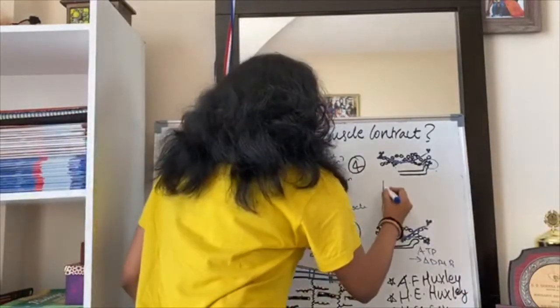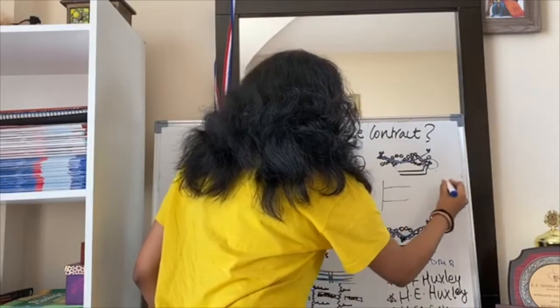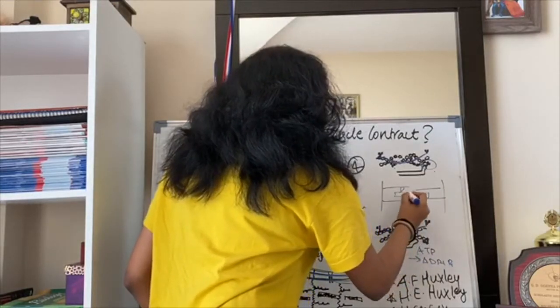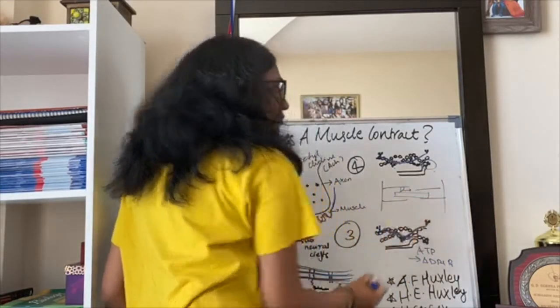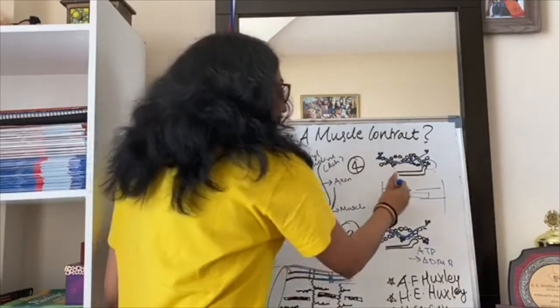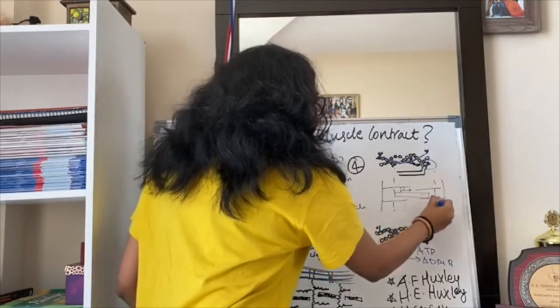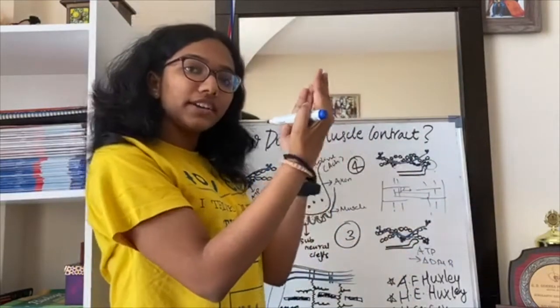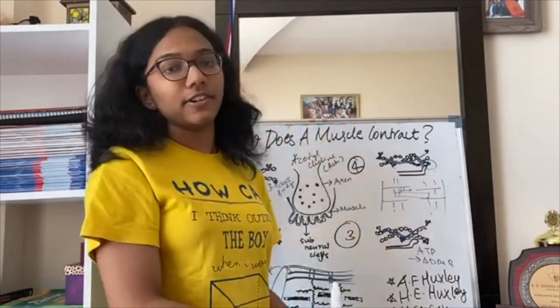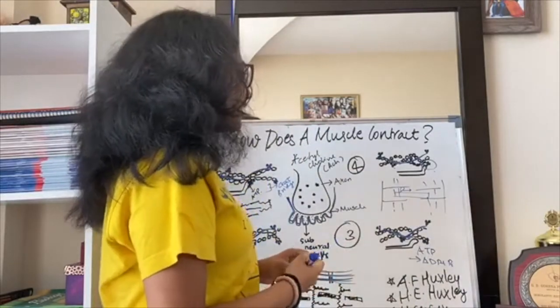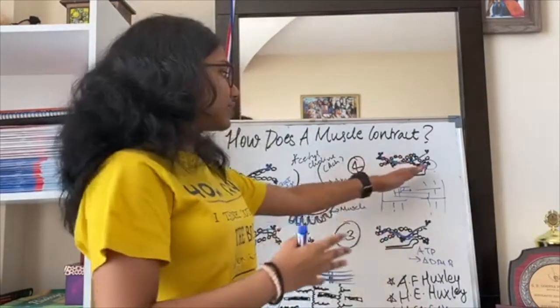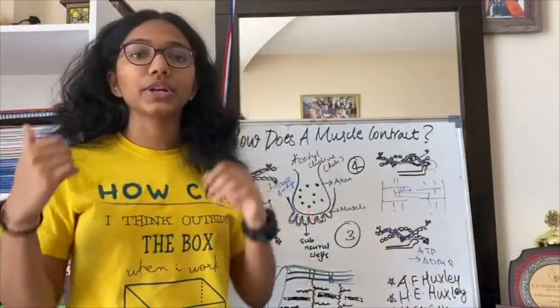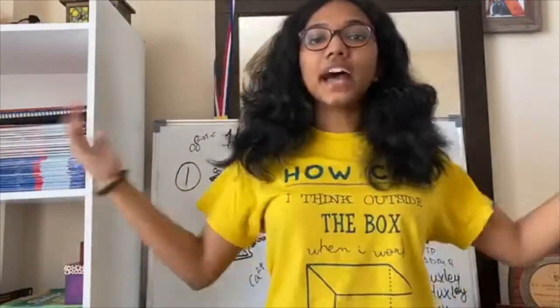Just try to visualize this. This is myosin here, actin filament, this is myosin, it's getting bound here, now this is moving forward. That just means that this Z line is coming closer and closer and as the Z line contracts and contracts, muscle contracts. And for relaxation, basically nothing happens. It just moves away from the crossbridge and calcium ions get back and get stored in the L-tubules.